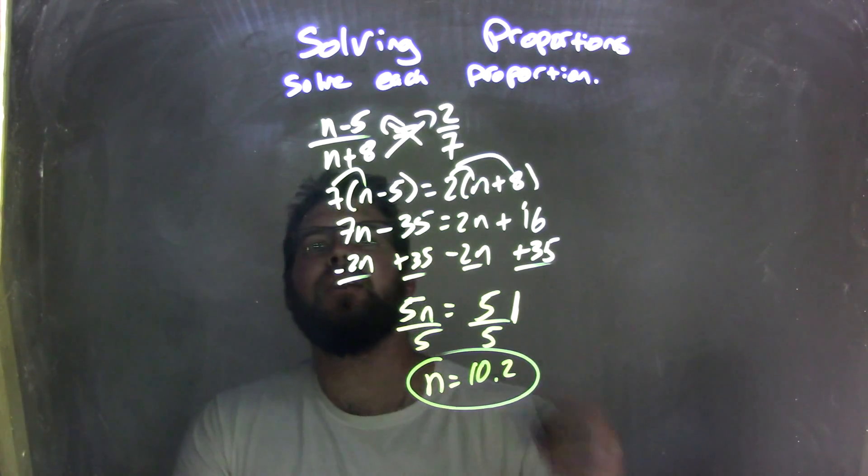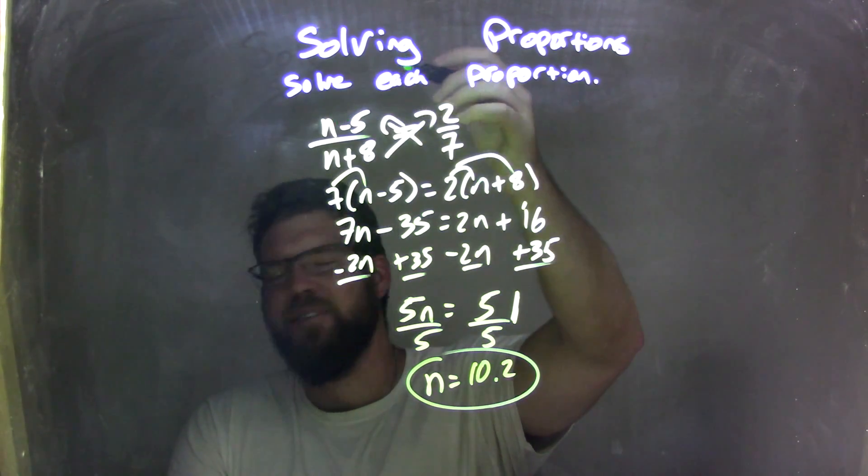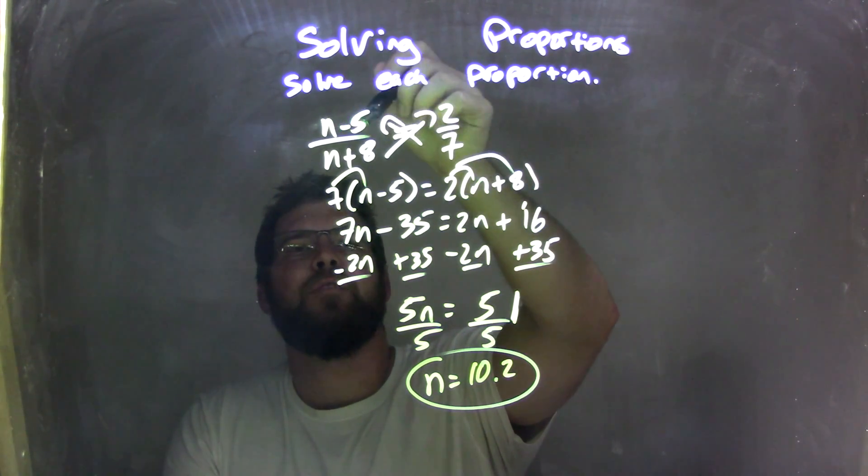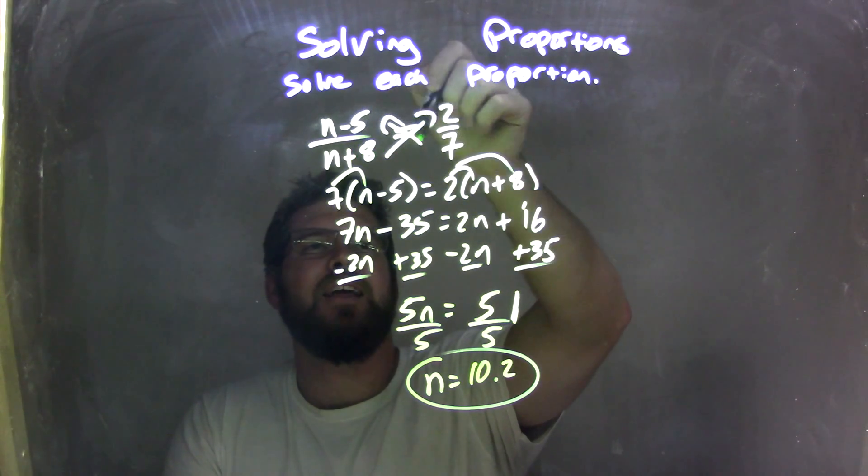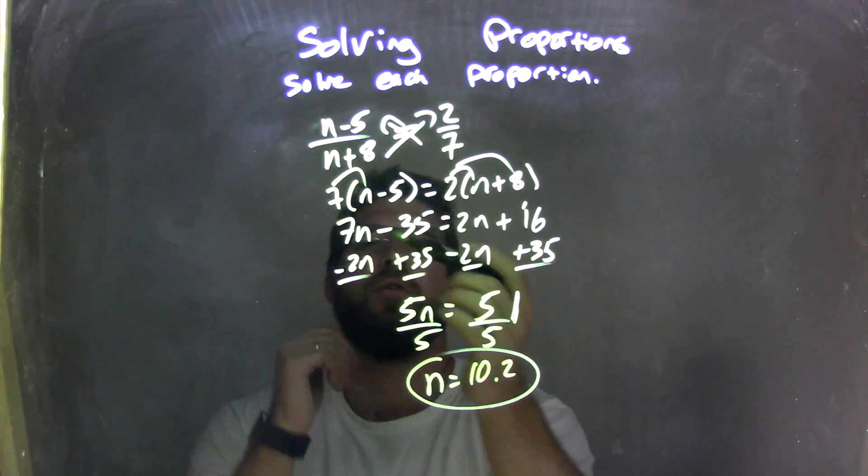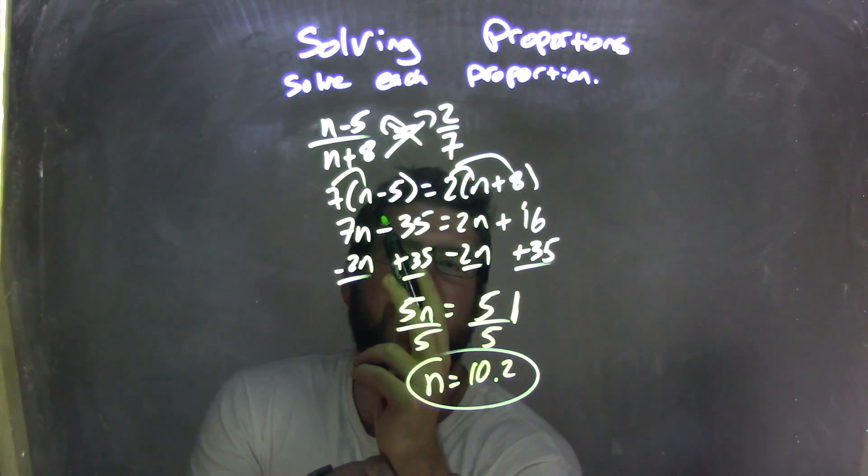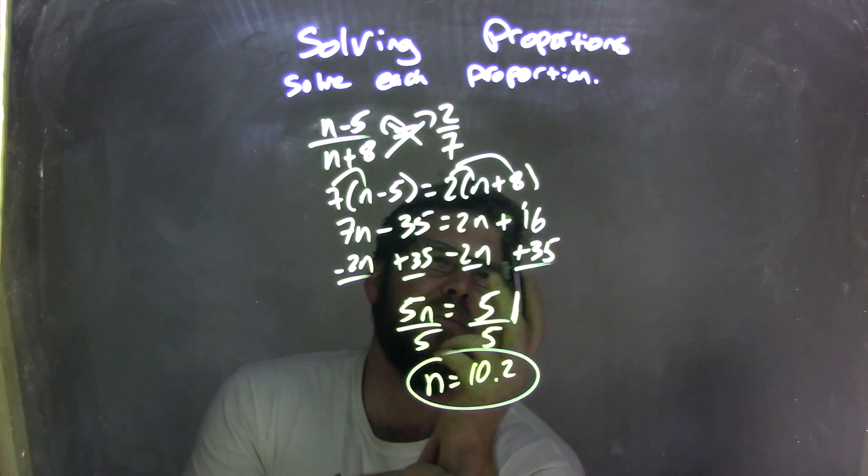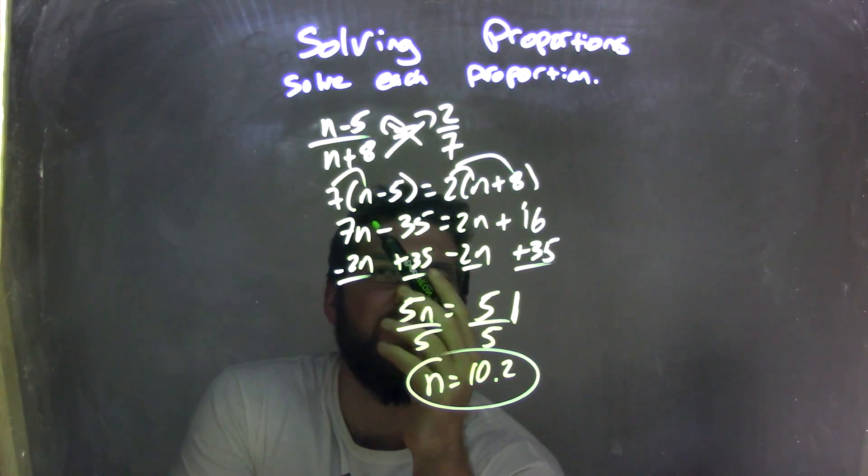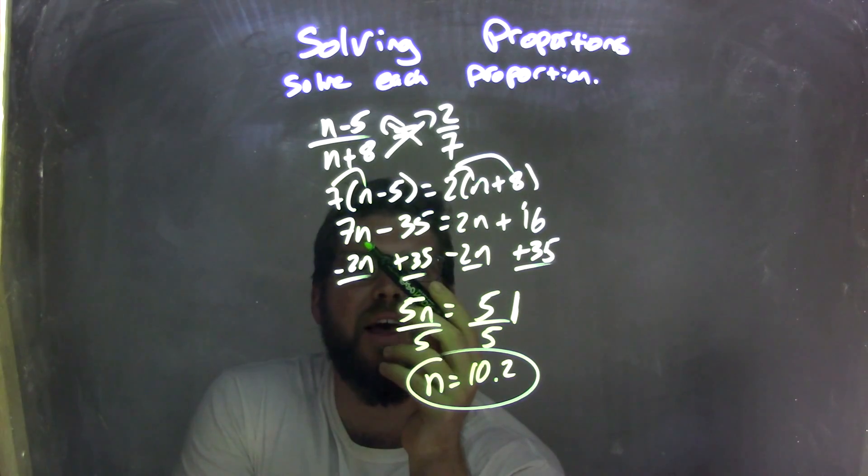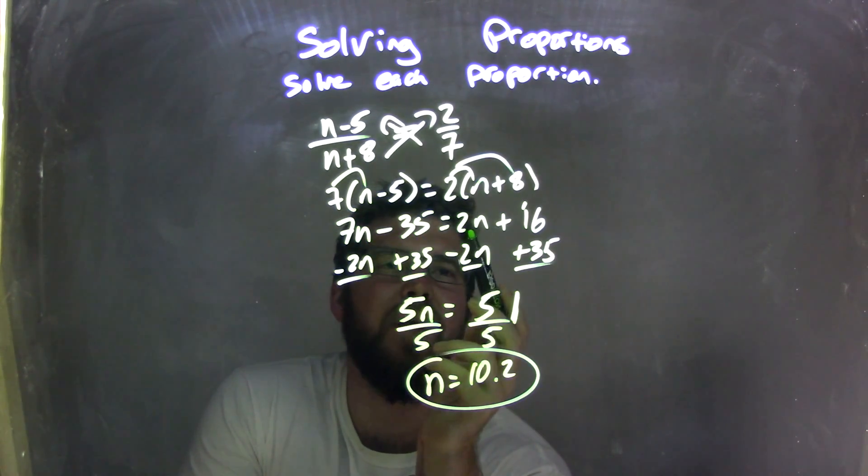So let's recap. We're given n minus 5 over n plus 8 equals 2 over 7. I cross multiply, giving me 7 times n minus 5 equals 2 times n plus 8. I then had to distribute the 7 and the 2, giving me 7n minus 35 equals 2n plus 16.